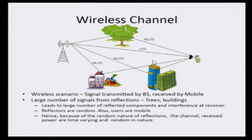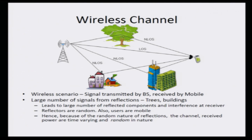For instance, if you look at this typical wireless communication scenario, I have a wireless channel in which there is a base station which is transmitting a signal to a mobile station, and this signal is received by the mobile station. But there are a large number of reflectors in the wireless environment and these reflectors are random — large objects such as trees and buildings, which are also known as scatterers. Hence, there are a large number of signals and these signals are randomly received at the mobile station, resulting in a large amount of interference.